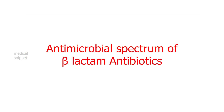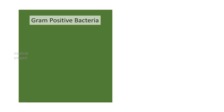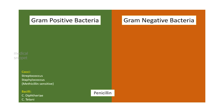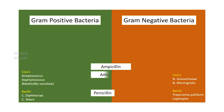The antimicrobial spectrum of beta-lactam antibiotics: penicillin is a narrow-spectrum antibiotic, potent primarily against gram-positive organisms, inhibiting only a few gram-negative organisms. Extended-spectrum penicillins like ampicillin and amoxicillin are active against all organisms sensitive to penicillin; in addition, they inhibit many gram-negative bacilli.